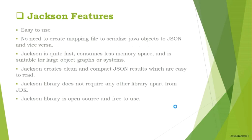Jackson is very easy to use — no complicated configuration is required. You just use the jar file, add it to your class path, and you can use the JSON API in your Java code. Moreover, there is no XML configuration file required to map Java objects to JSON and JSON to Java. It is all taken care of by Jackson itself.